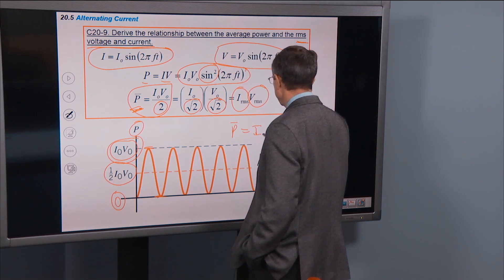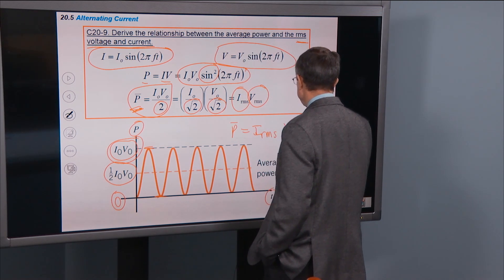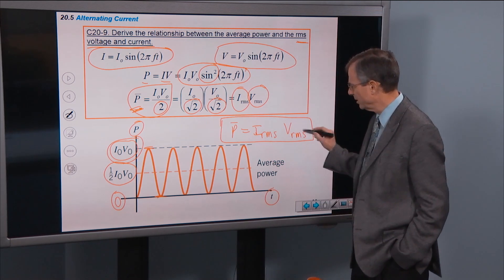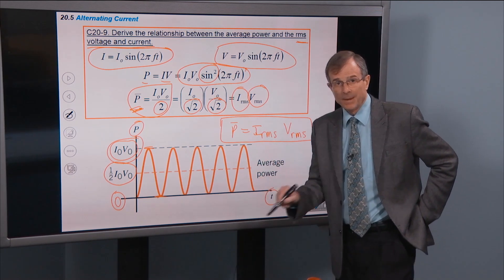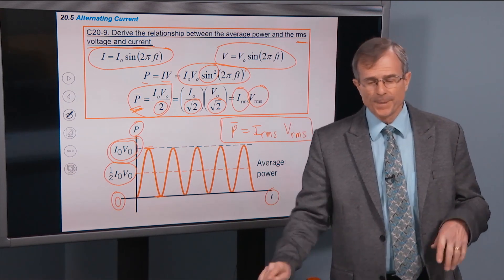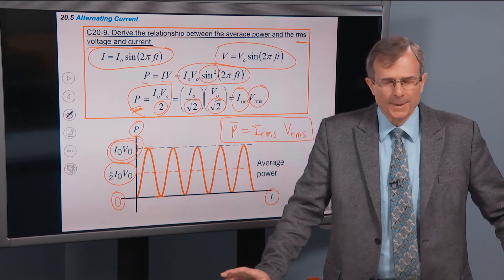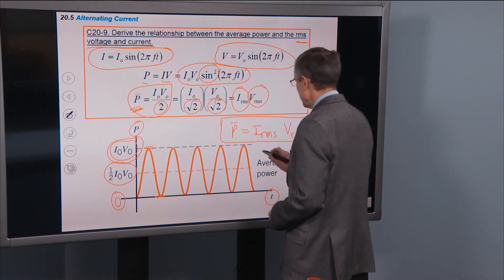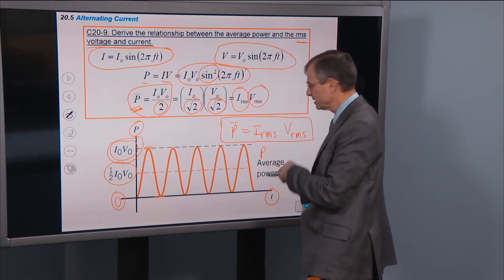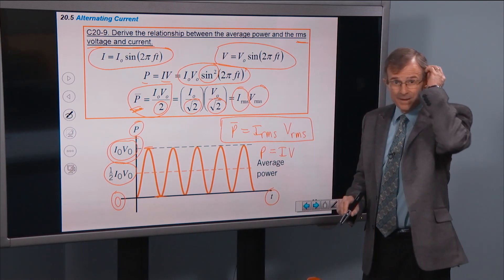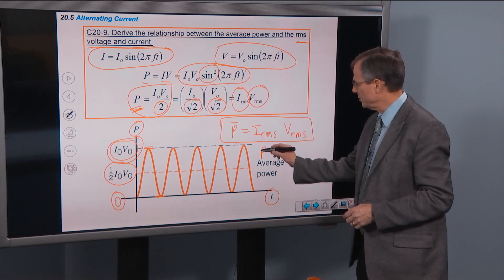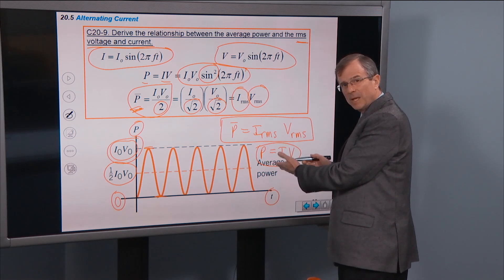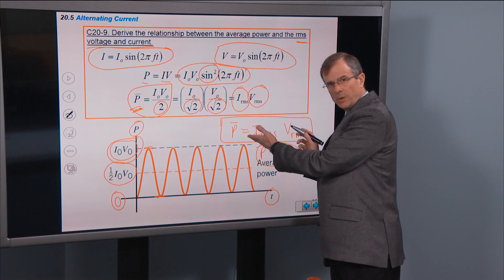P_average = I_RMS × V_RMS. That's the relationship between the RMS current and voltage and the average power. This equation looks just like P = IV — the RMS values allow you to use the same form of the power equation, but now representing average quantities rather than time-dependent ones.